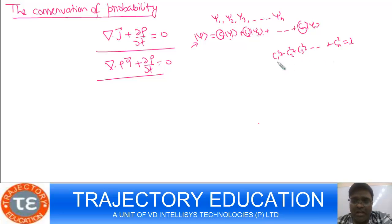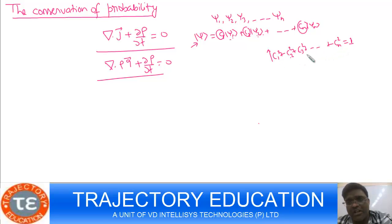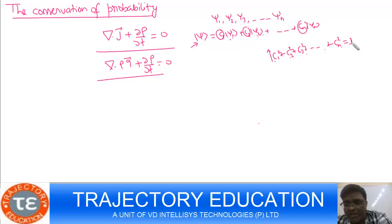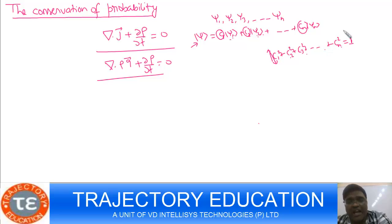At t = 0, c1 may be high while c2, c3, ... cn are low. But as time passes, if c1 increases, the other constants must decrease, because the sum of the probability densities must equal 1. The particle must be found somewhere — it can be in ψ1, ψ2, or ψn — so the sum of the probability densities has to be 1.